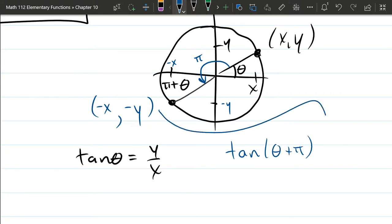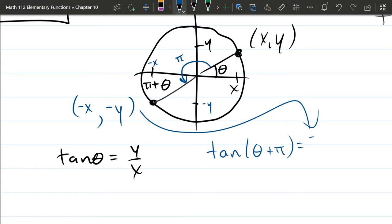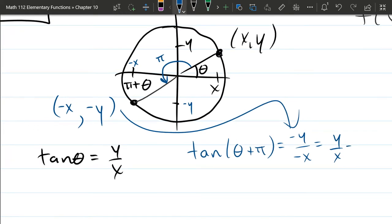So I'm using this blue point right here to get these values. It's going to be negative y over negative x. But we just divided negative by negative, so that's the same as just y over x. And that equals original tangent theta. So tangent actually has a period of 1 π.